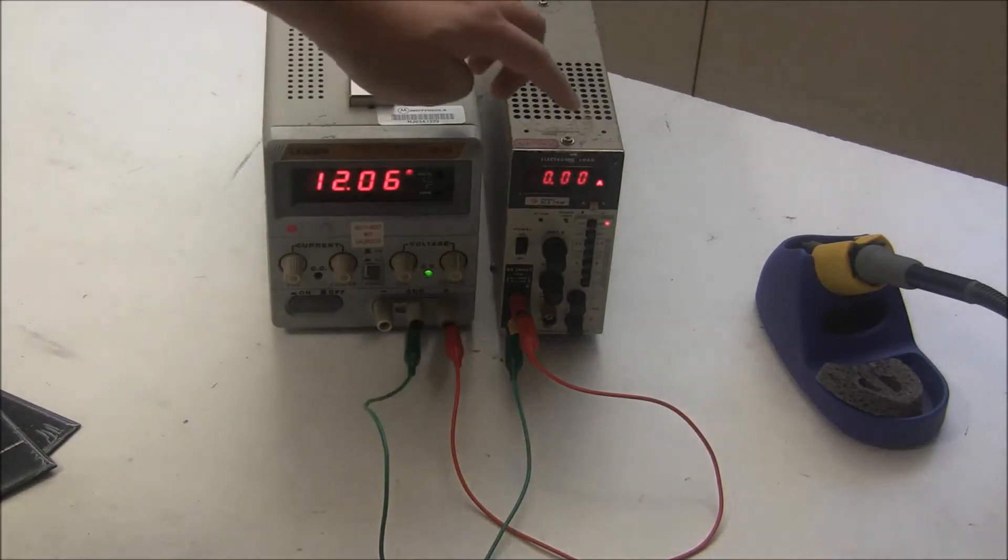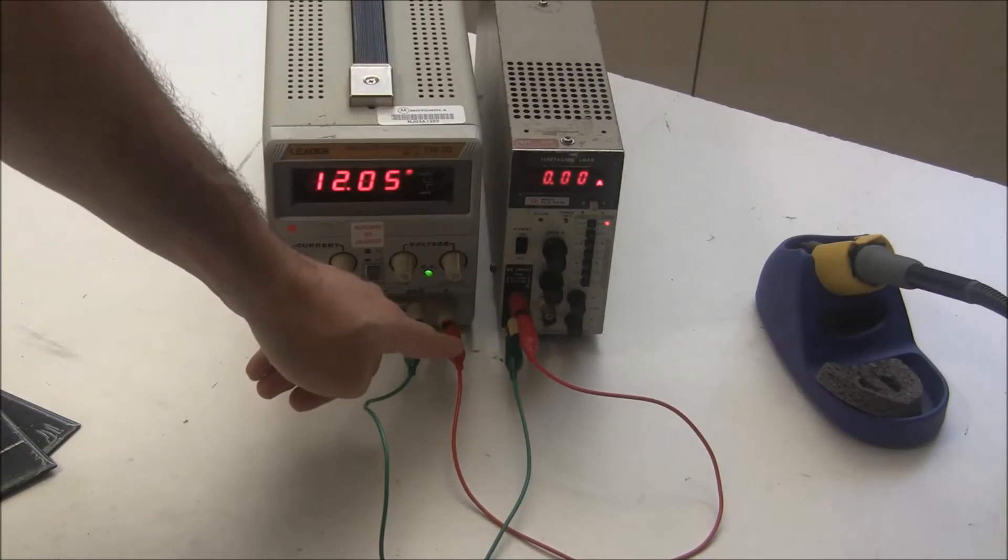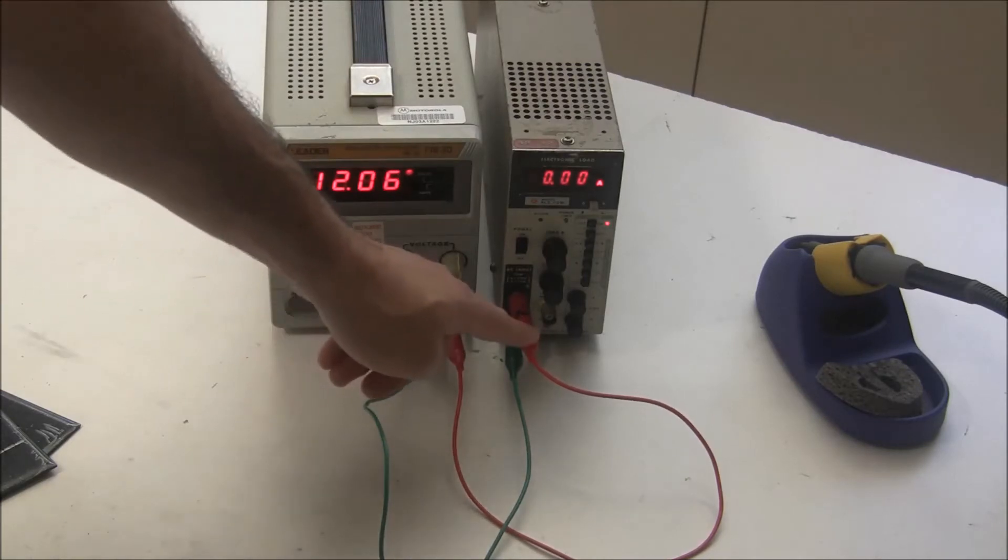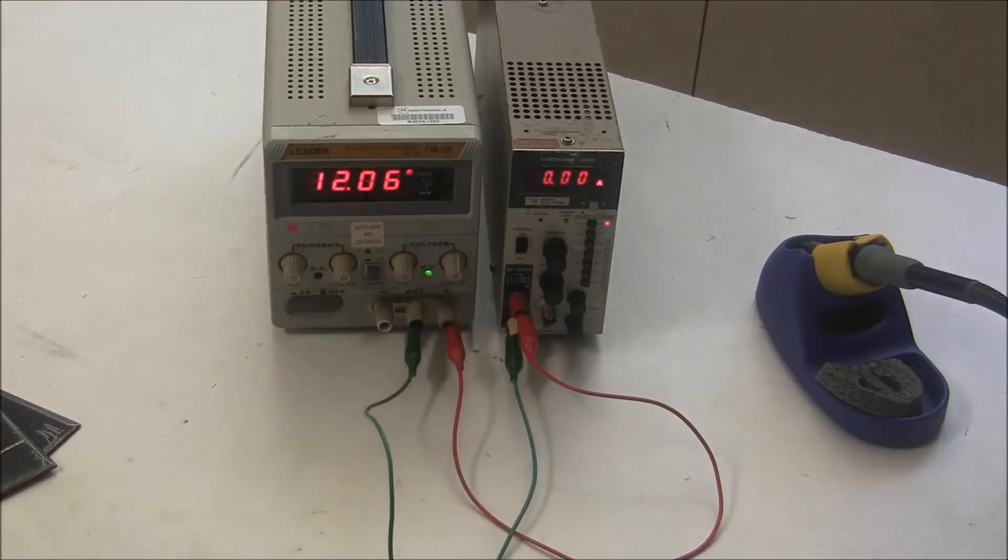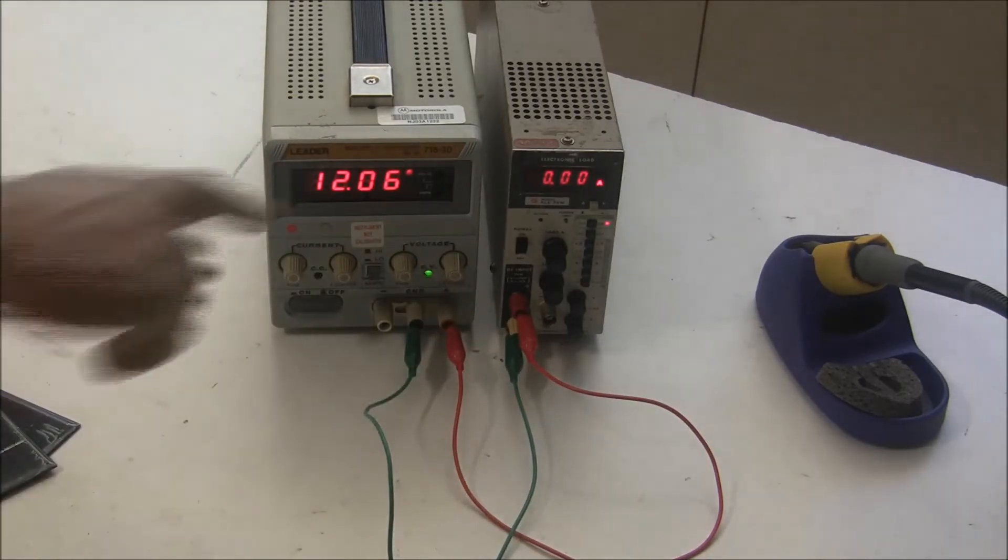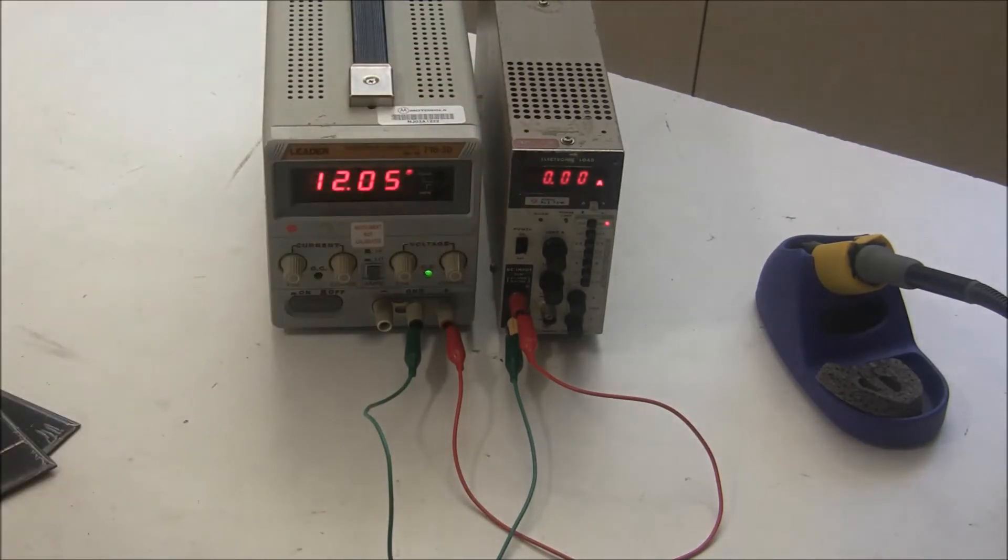I have the positive output connected to the positive input of the load, the negative or ground connected to the ground of the load. What I can do is draw a constant current on this electronic load and it can handle about 72 watts this model. I got this one broken fairly cheap and I fixed it and got it working well.